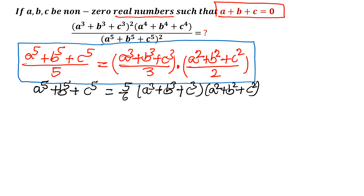If you want to prove this, consider A squared plus B squared plus C squared times A cubed plus B cubed plus C cubed, expand it, collect A to the power 5 plus B to the power 5 plus C to the power 5 — you will get this result directly. Now I will put this value in the given expression.